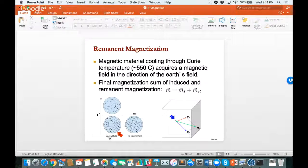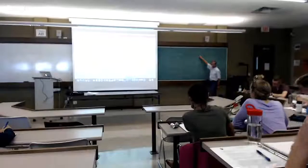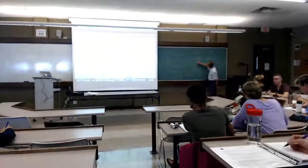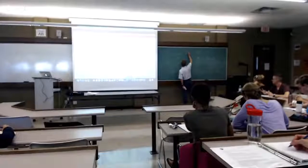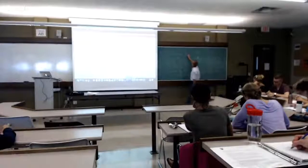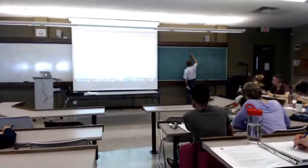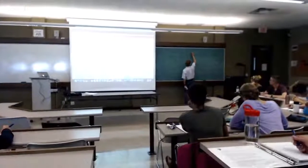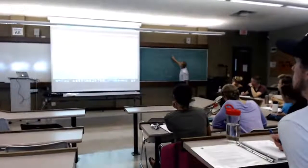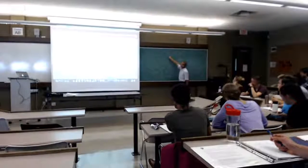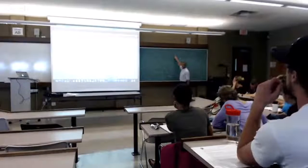The next important thing is remnant magnetization. Everything we've talked about so far has been induced magnetization — fields generated because of the external field, and that magnetization always lies in the direction of that external field. We had the formula: magnetization M, which equals dipole moment per unit volume, equals magnetic susceptibility kappa times H, the magnetic field. Since kappa is just a constant, the magnetization is in the same direction as the Earth's field.